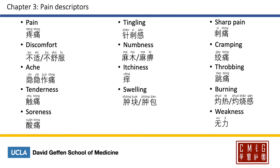Let's start with the pain descriptors. Pain is 疼痛 in Chinese — either 疼 or 痛 means pain. Discomfort will be 不適 or 不舒服; 舒服 meaning comfort. Ache or dull pain is 隱隱作痛. Tenderness will be 触痛; 触 meaning to touch or to press. Soreness will be 酸痛; 酸 meaning the acidic feeling.